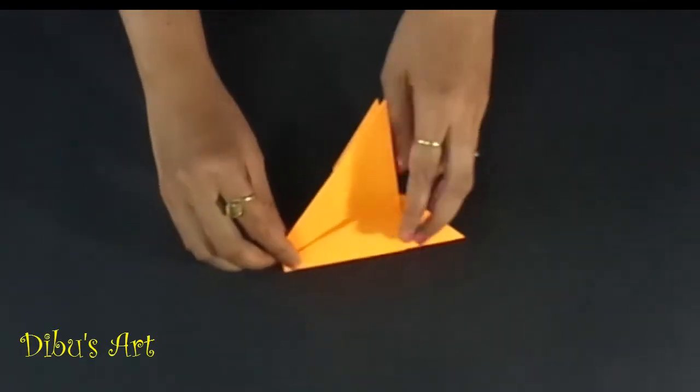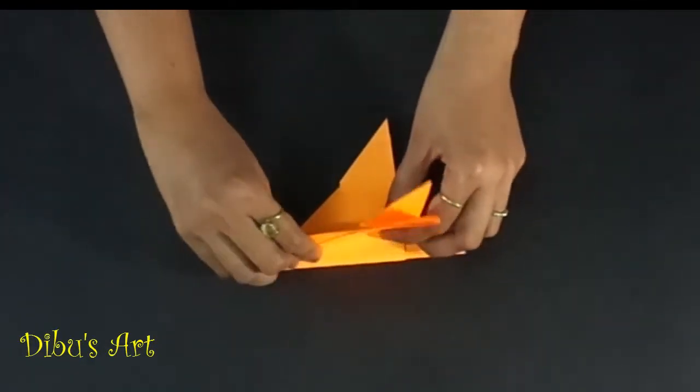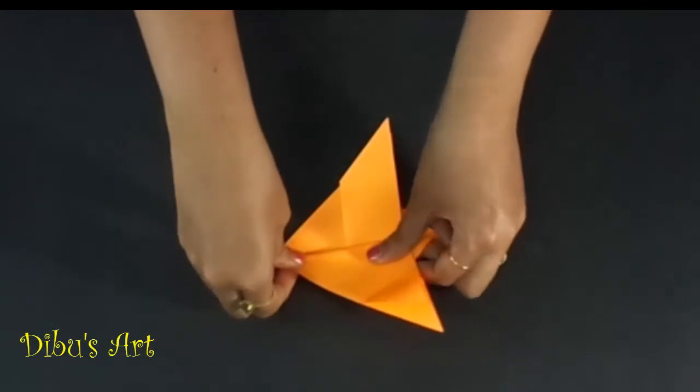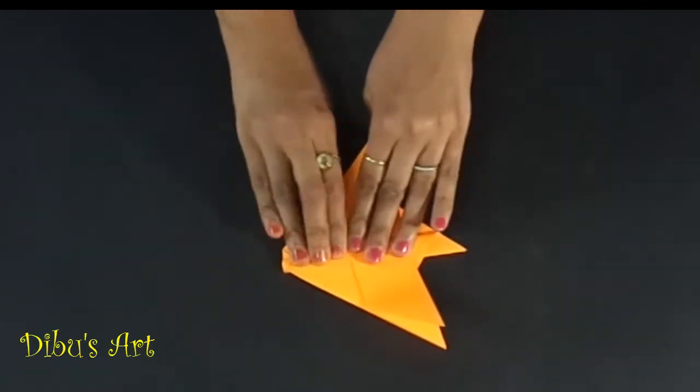Now there are two wings of the plane which are vertical. To make them horizontal, fold each wing downwards by making a parallel line with the center crease.